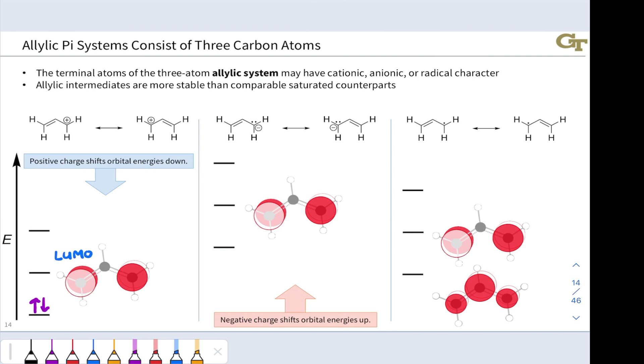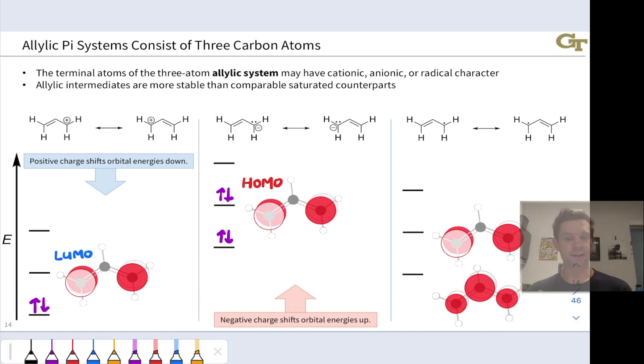In the allyl anion, now I've added two more electrons, and because of the negative charge, the orbital energies have been pushed up. The most important orbital in this molecule is the highest occupied molecular orbital, the HOMO. And for the radical, it's the orbital that has the unpaired or lone electron that's the most important, and we might call that the SOMO, the singly occupied molecular orbital.